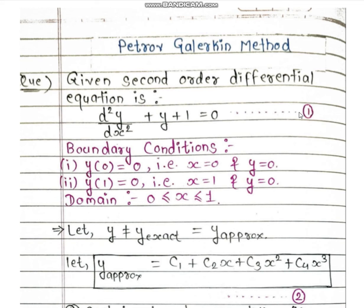Hello everyone, my name is Shuram Nishmok and welcome to my YouTube channel. Today we are going to see the Petrov-Galerkin method. The Petrov-Galerkin method is one of the easiest numerical methods used to solve differential equations approximately. By this method, we are not finding the exact solution but finding an approximate solution which is near to the exact solution.